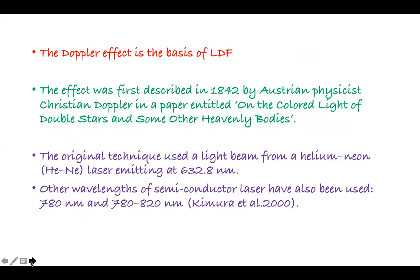The Doppler effect is the basis of laser Doppler flowmetry. This effect was first described in 1842 by Austrian physicist Christian Doppler in a paper entitled 'On the Colored Light of Double Stars and Some Other Heavenly Bodies.' This technique uses a light beam from a helium-neon laser with a wavelength of 632.8 nanometers. Other wavelengths used are semiconductor lasers with wavelengths of either 780 nanometers or 820 nanometers.